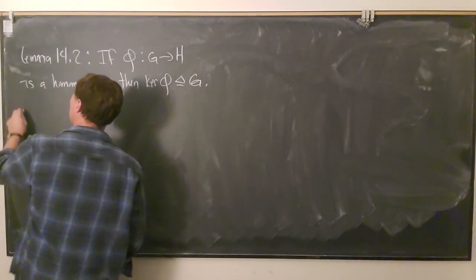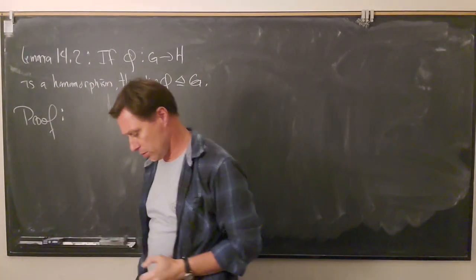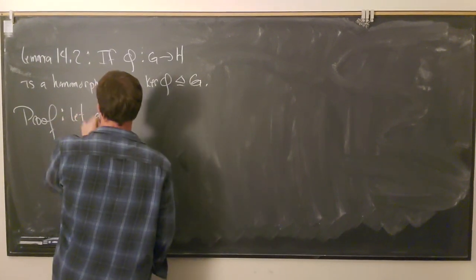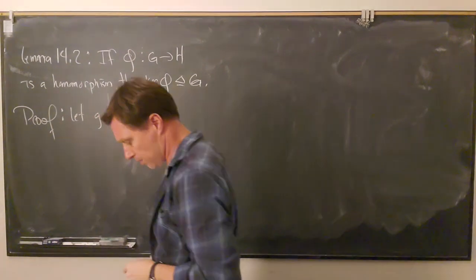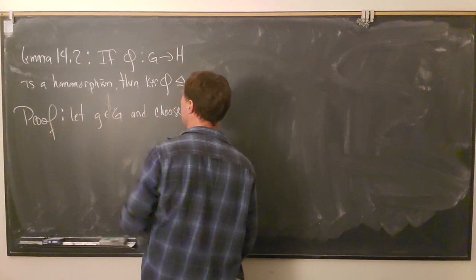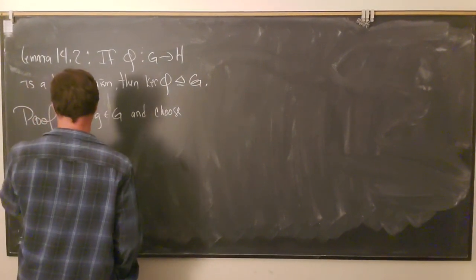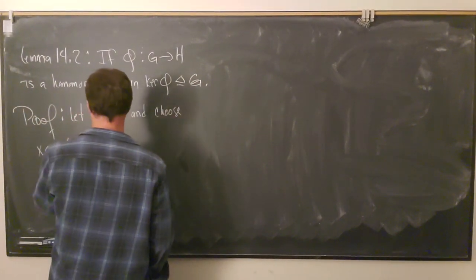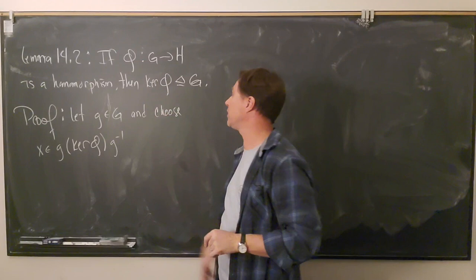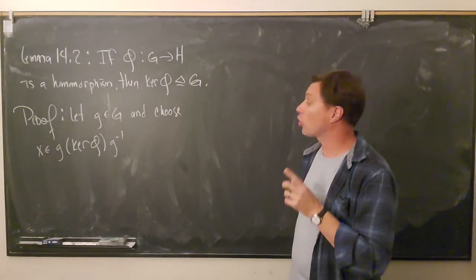The proof here will be an application of the normal subgroup test. We already know that the kernel is a subgroup — we learned that a while ago, so a kernel is always a subgroup of the domain — and now we're showing that it's actually a normal subgroup.